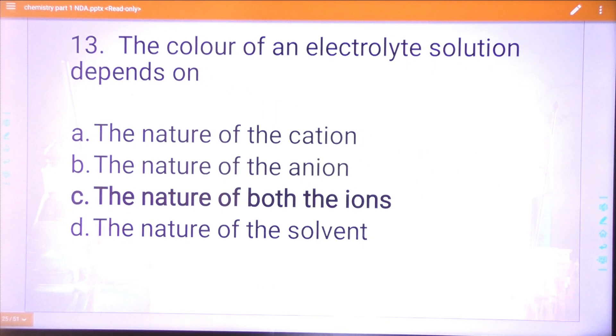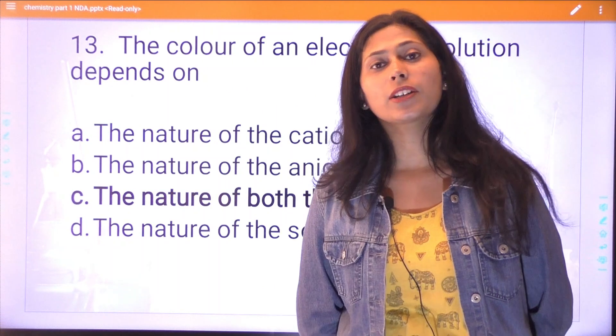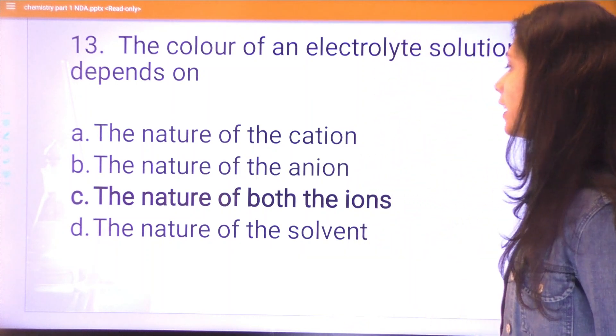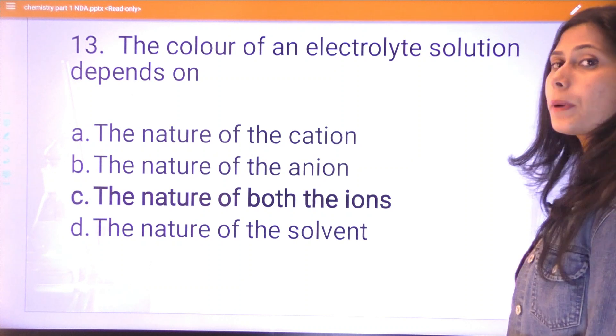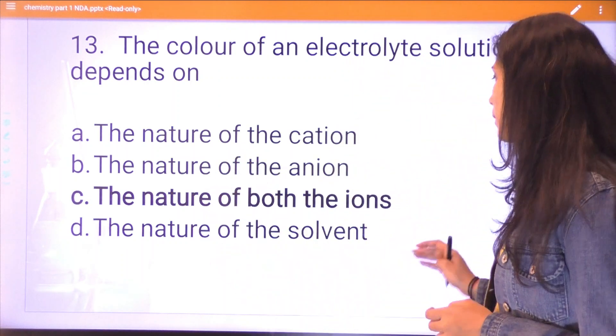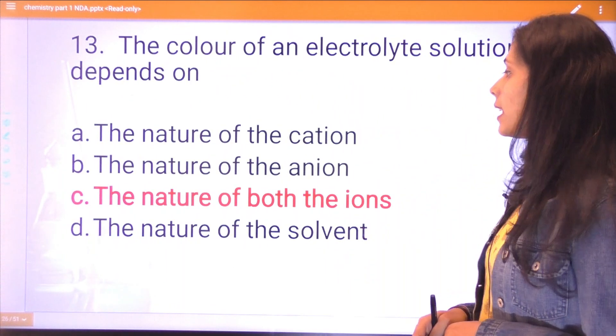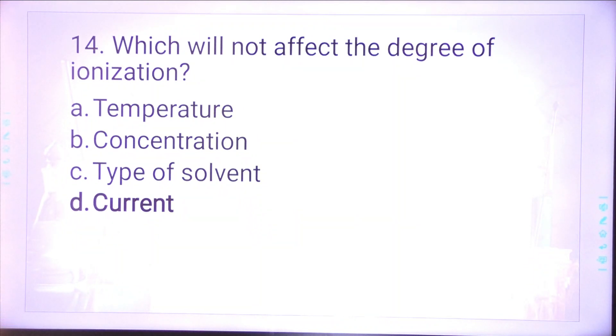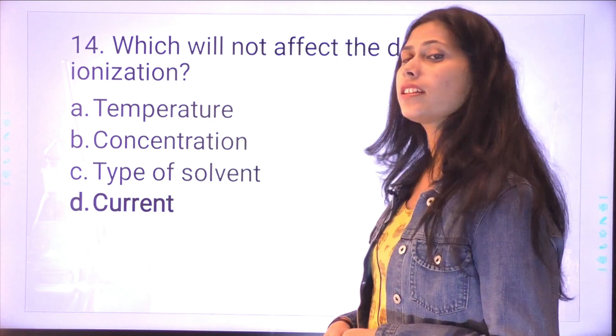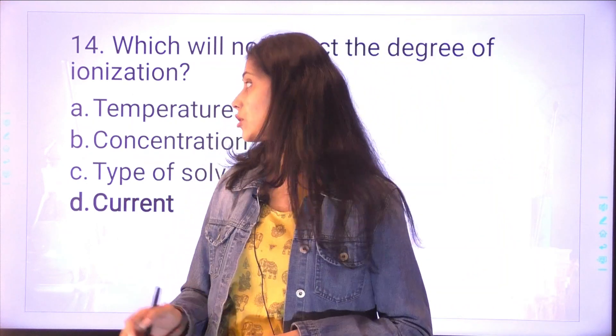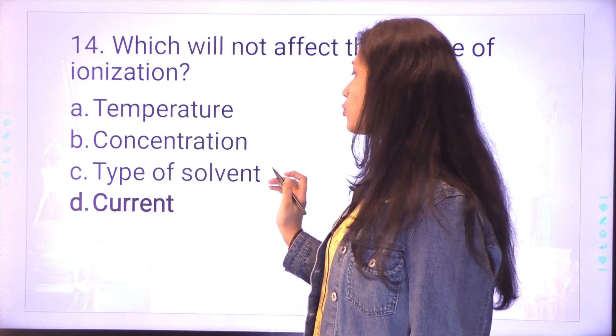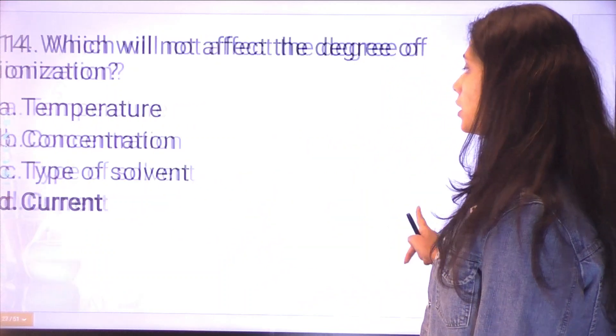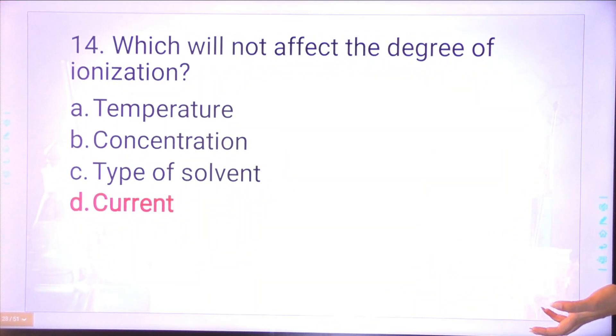Question thirteen: the color of an electrolyte solution depends on the nature of the cation, nature of the anion, or the nature of both. Electrolyte nature depends on cation and anion, so the correct answer is option C. Question fourteen: which will not affect the degree of ionization?